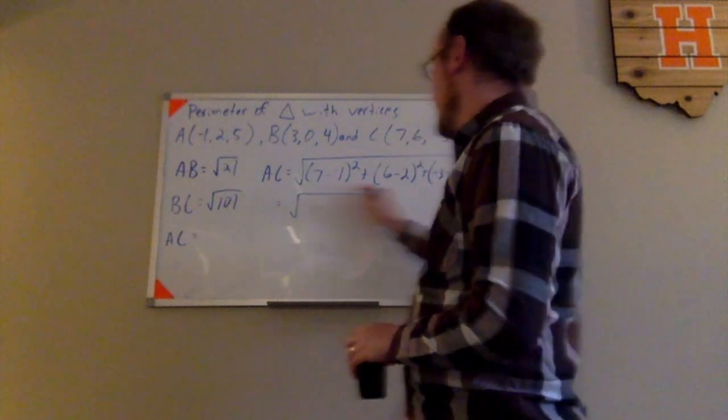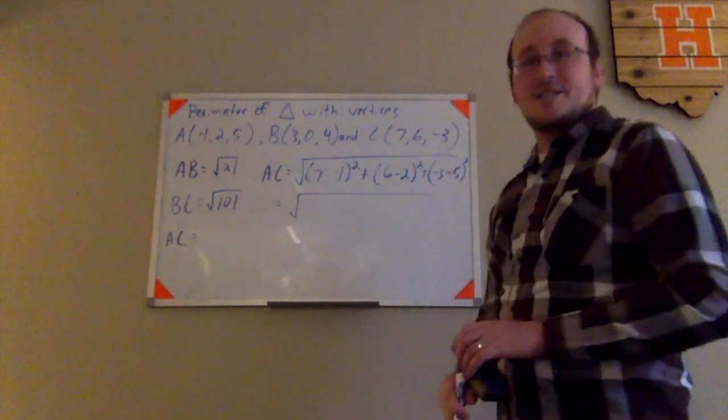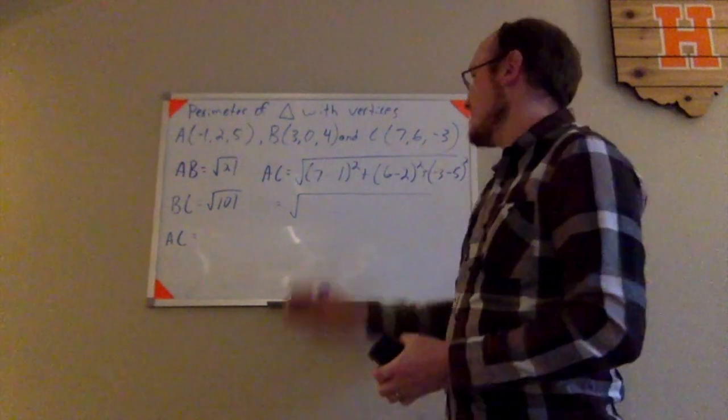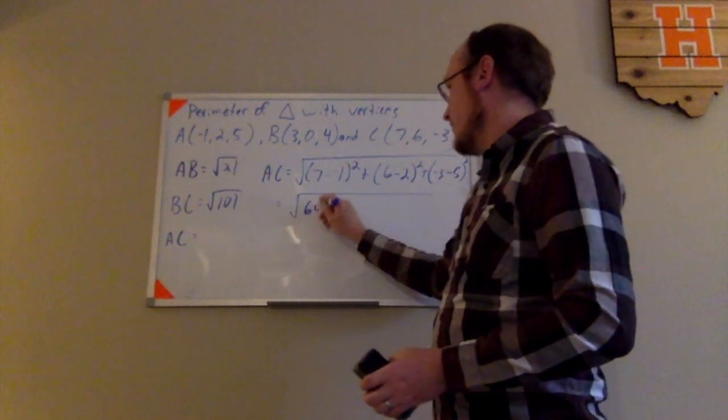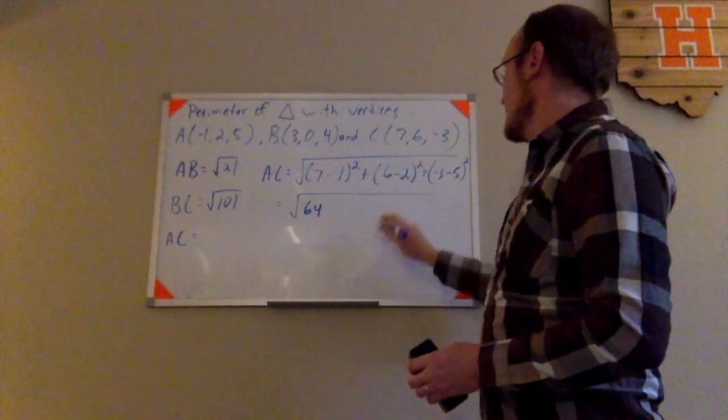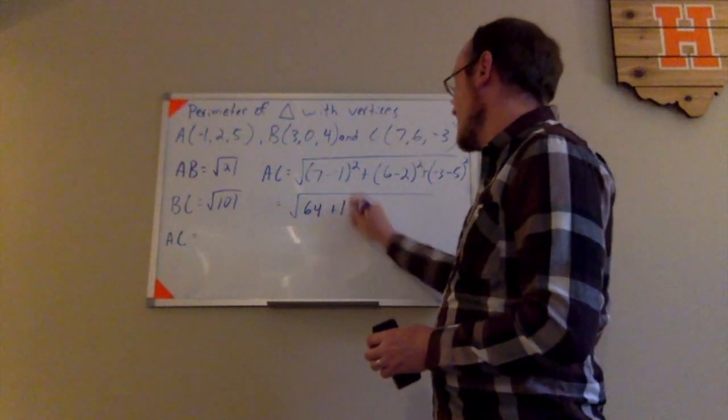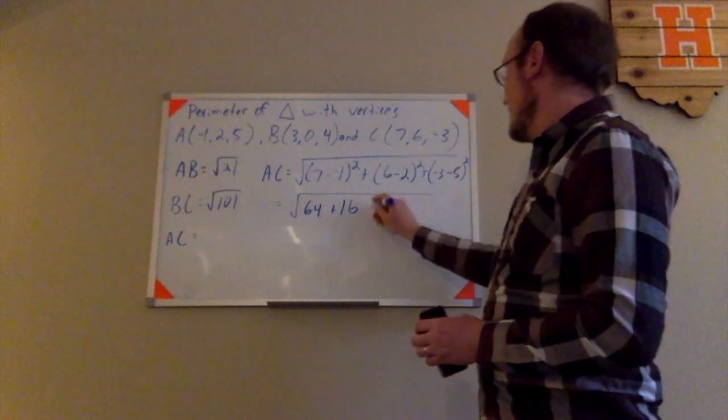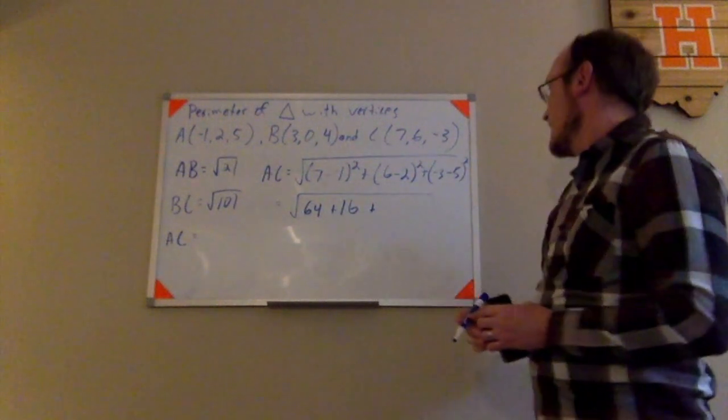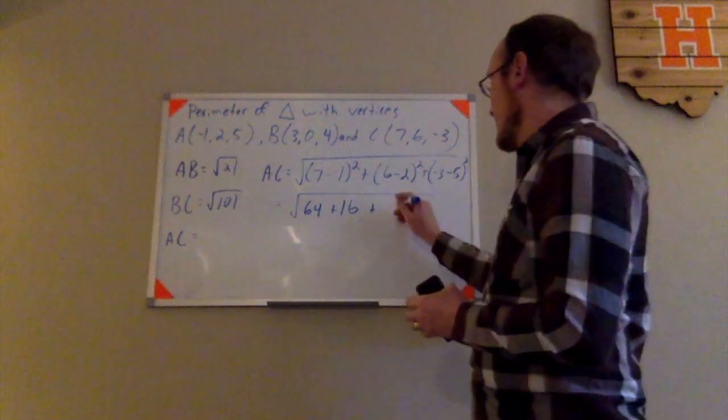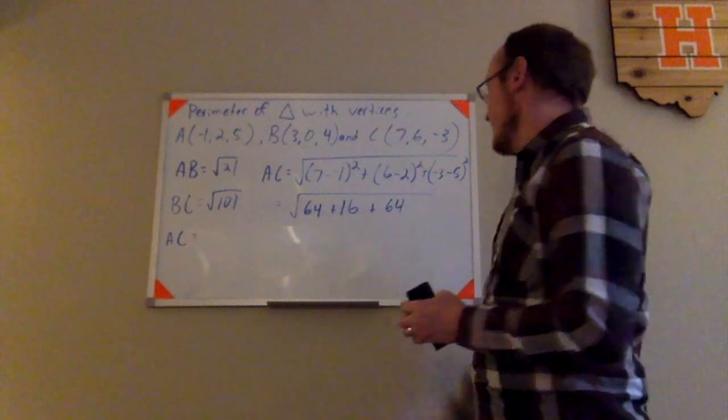So working to simplify. 7 minus negative 1 is actually positive 8. Positive 8 squared is 64. 6 minus 2 is 4. 4 squared is 16. And then over here, I have negative 3 minus 5, which is negative 8. Negative 8 squared is also 64.